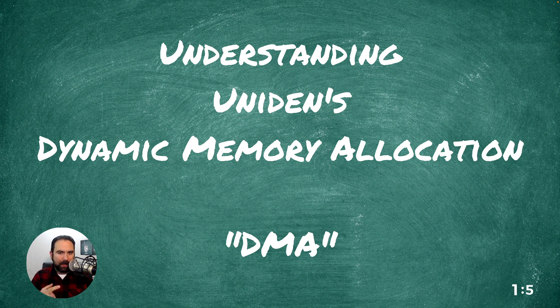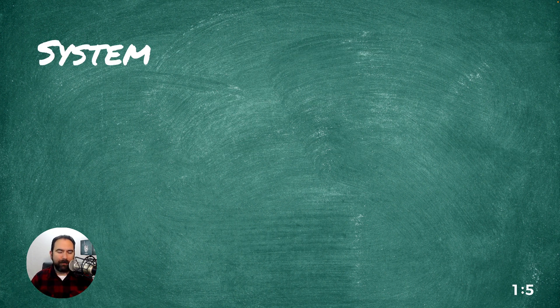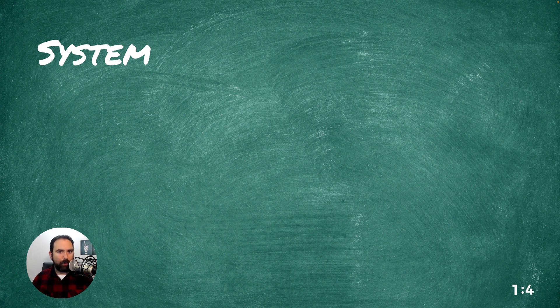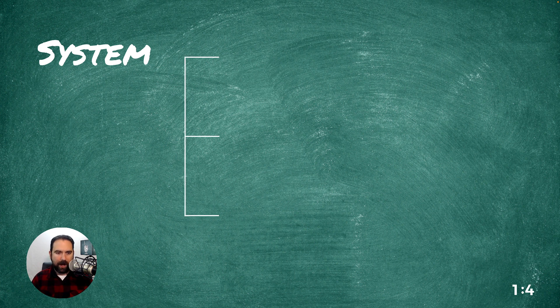Dynamic memory allocation, or DMA — what is that? First, we need a system. Our system is our main container. This is what everything lives in for what we're programming. We're going to have two different types of systems: conventional and trunking. Here we have the baseline of a conventional system.